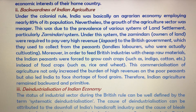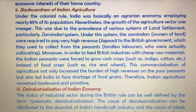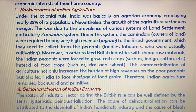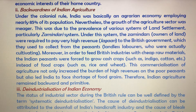Moreover, in order to feed British industries with cheap raw materials, Indian peasants were forced to grow cash crops instead of food crops. This commercialization of agriculture not only increased the burden of high revenues on poor peasants but also led India to face a shortage of food grains.